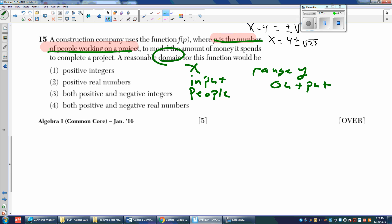So here we're talking about people. How many people do you have? And the output would be money, the amount of money that it spends. So can we have half of a person? We can't have half of a person. Can we have negative people? No, we can't have negative people. So we're going to eliminate positive and negative integers and positive and negative real numbers.